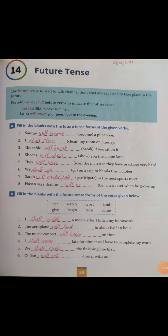Good morning class 4th students. This is English class and today we are going to start chapter 14, Future Tense. The Future Tense is used to talk about actions that are expected to take place in the future. We add will or shall before words to indicate the Future Tense — the Future Tense talks of actions that will or will not take place in the future.